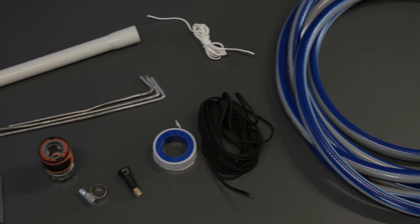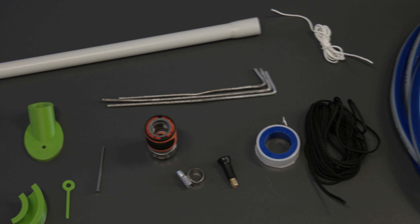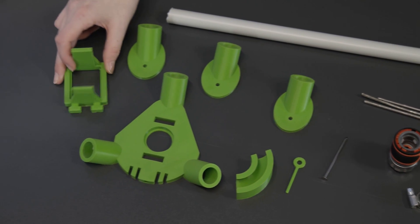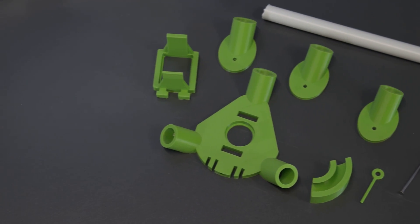Besides the 3D printed components, you will also need some other things. You can find a list of all the materials you will need in the user manual of Potpad, which you can download from our website.